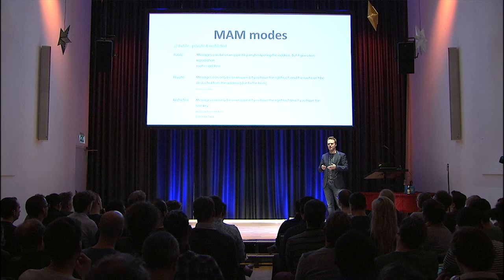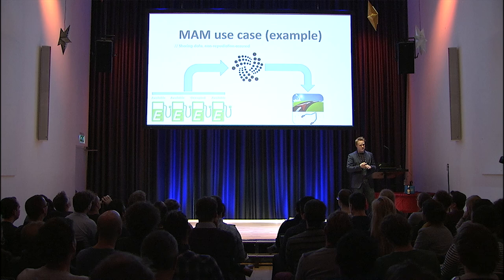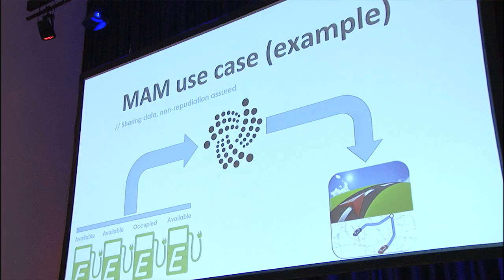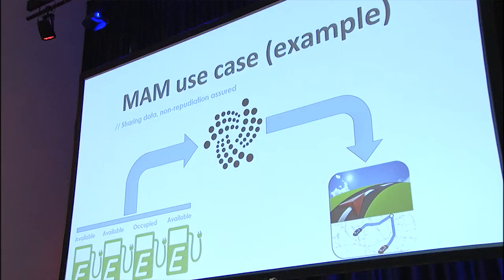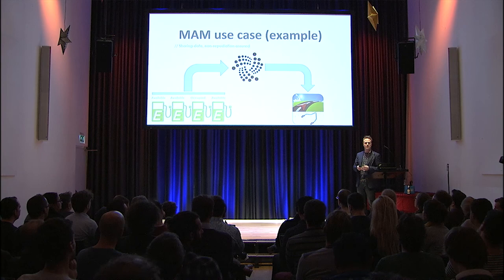This allows for some interesting use cases — for example, with charge stations. If you create a stream somebody can fetch, you can send data about whether a charge station is available or not to that stream. People can know for sure that it was the owner of the charge station who put it there, because it's the only one able to do so using the seed. This allows navigation software to connect to the stream, get the data out, and show if a charge station is available or not — especially as more people drive electric cars and finding available charge stations becomes a challenge.